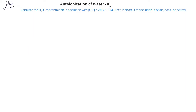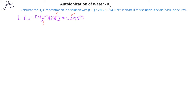In this problem, we're asked to calculate the hydronium ion concentration in a solution that has a hydroxide ion concentration of 2.0 times 10 to the negative 6th molar. After that, we're asked to indicate if this solution is acidic, basic, or neutral. Since we're given the hydroxide ion concentration and we know the value for Kw, we can use those two values to find the concentration of the hydronium ion.